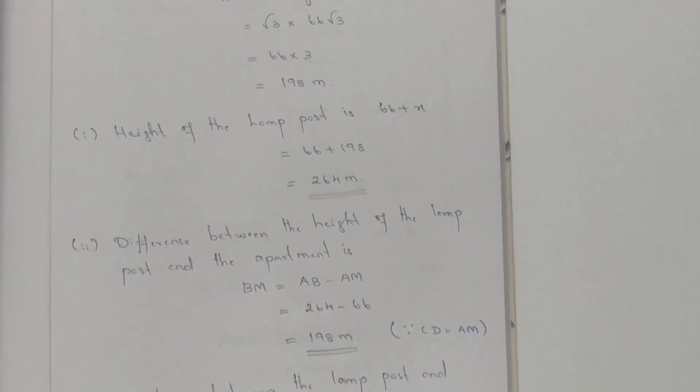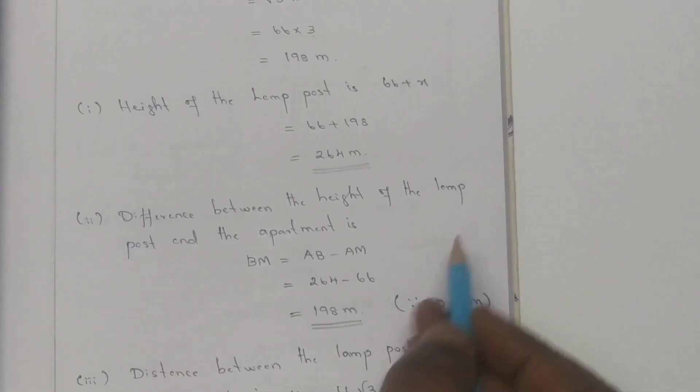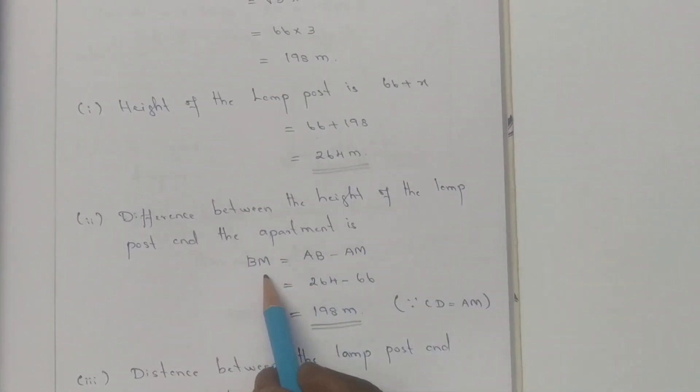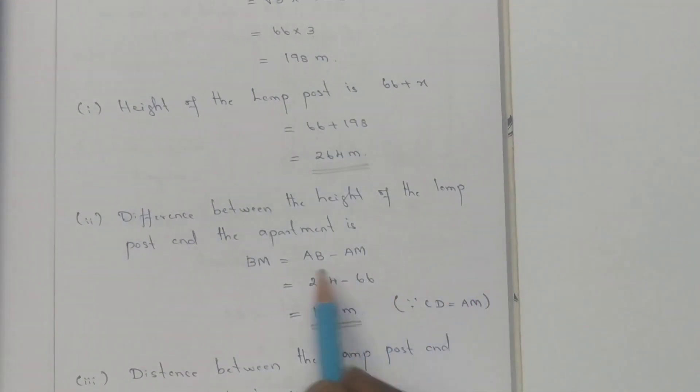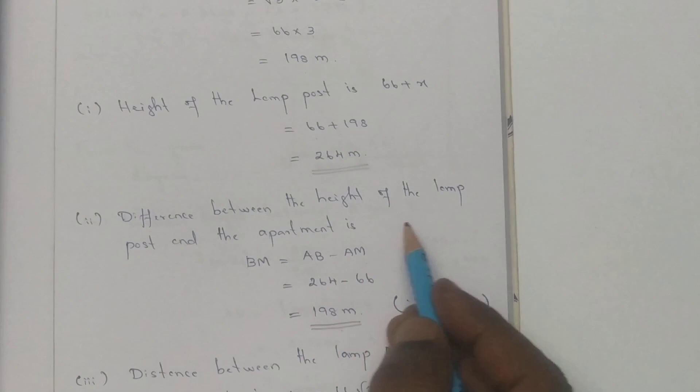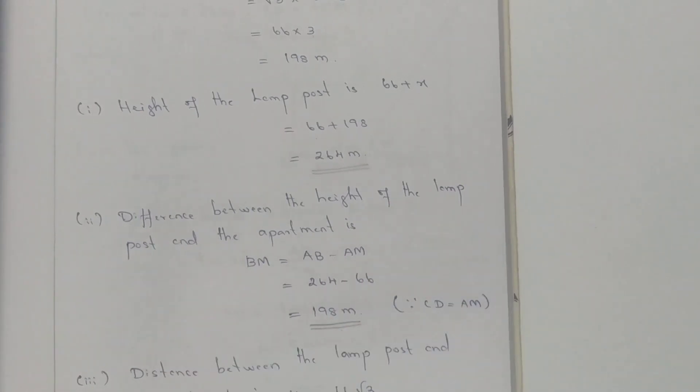Next, the difference between the height of the lamp post and the apartment is X. BM equals AB minus AM equals 264 minus 66 equals 198 meters. So the difference is 198 meters.